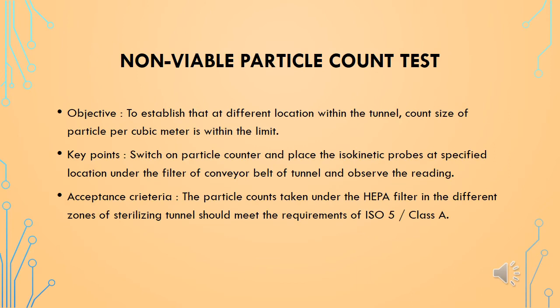A three percent variation is considered acceptable to the set speed. The fourth qualification test is non-viable particle count. The objective of this test is to establish that at different locations within the tunnel, the count and size of particles per cubic meter is within the limit. To perform this test, particle counters are used, wherein isokinetic probes are located at a specified location under the filter of the conveyor belt of the tunnel, and readings are observed.